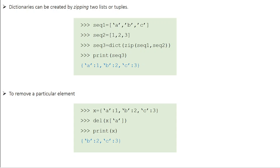You can also create a dictionary by zipping two lists or tuples. Suppose you have sequence1 = ['a', 'b', 'c'] and sequence2 = [1, 2, 3]. When you say sequence3 = dict(zip(sequence1, sequence2)), Python zips sequence1 and sequence2 together. The keyword 'dict' tells Python to combine them as a dictionary. So print(sequence3) gives you the output: {'a': 1, 'b': 2, 'c': 3}.